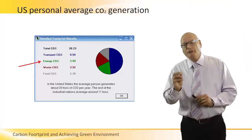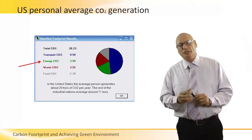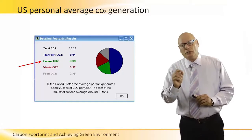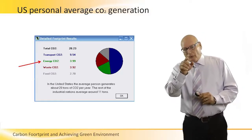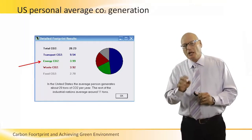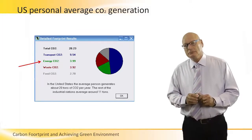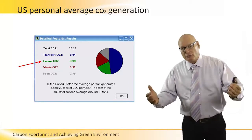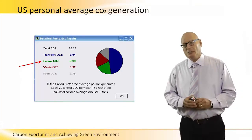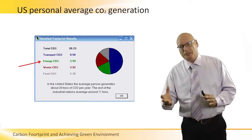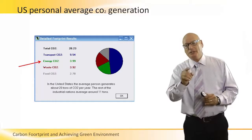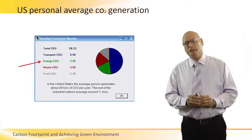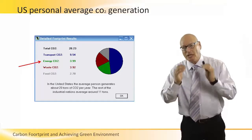Let's take an average person in the United States and see how much CO2 is generated. The average person in the US generates about 20 tons of CO2 per year, with about 4 tons coming from energy per person per year. If you multiply that by the number of people in the United States, we know how much CO2 is generated just from energy. The US average is 20 tons per year compared to 11 tons for the rest of the industrial nations — so the US is roughly double the rest of the world.